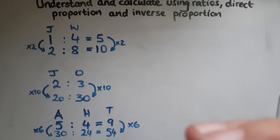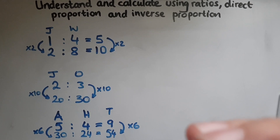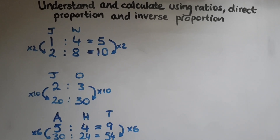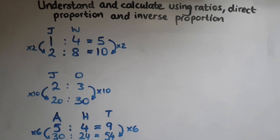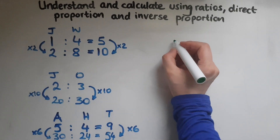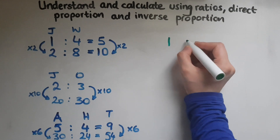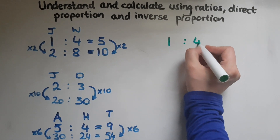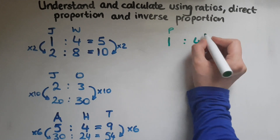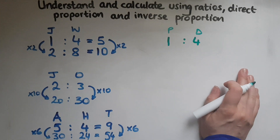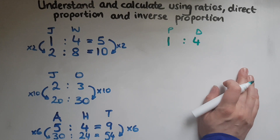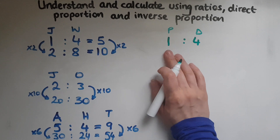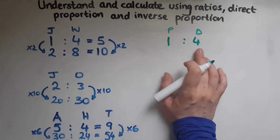We'll now look at inverse proportion and see what inverse proportion means. It takes one person four days to paint a whole house, so one person takes four days.